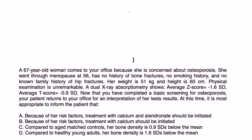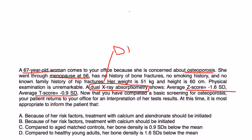Let's look at some clinical vignettes. A 67-year-old woman comes to your office concerned about osteoporosis. She went through menopause at 56, has no history of bone fractures, no smoking history, and no known family history of hip fractures. Her weight is 51, height is 60 centimeters, and physical exam is unremarkable. A DEXA scan shows a Z-score of 1.6 and a T-score of 0.9.